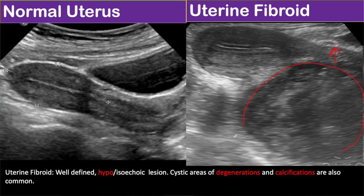Based on the location, uterine fibroid can be submucosal, intramural, or sub-serosal.